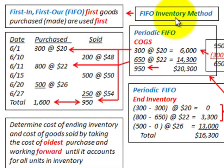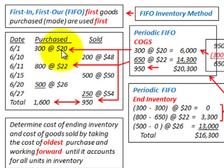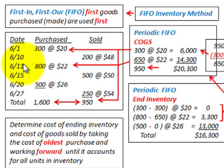Here we're going to be looking at the FIFO inventory method. That stands for First In, First Out — where the first goods purchased or made are the first ones used. We're going to go through some numbers showing how we would use this method based on some inventory purchases and sales.